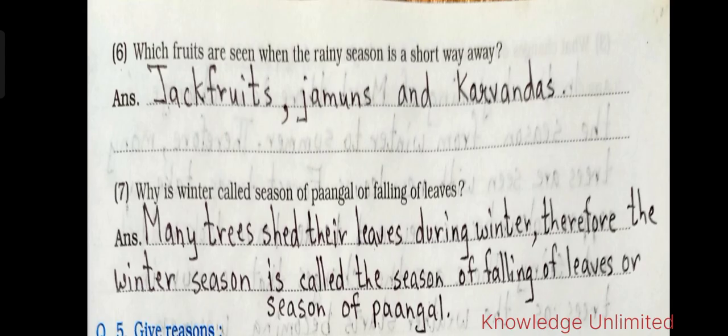Question six: which fruits are seen when the rainy season is a short way away? The answer is jackfruits, jamuns, and karwandas. Question seven: why is winter called the season of pangal or falling of leaves? Many trees shed their leaves during winter, therefore the winter season is called the season of falling of leaves, or season of pangal.